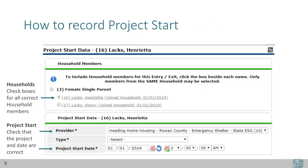Households: notice that the client you started with has their box already checked and grayed out — this client is automatically included. Also notice that there is a check box next to household type; if this is selected, all the members beneath it will become checked. By checking the boxes, you have said these clients are in this project. Check your EDA and back date mode again. If the project is not correct, cancel the project start and check your EDA mode.